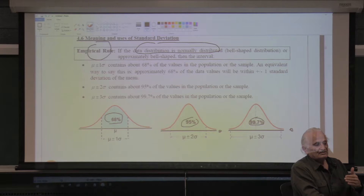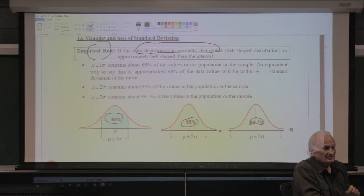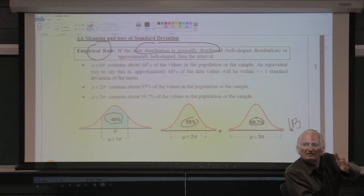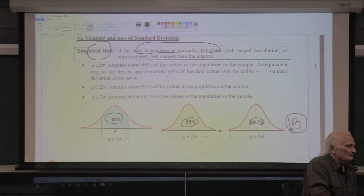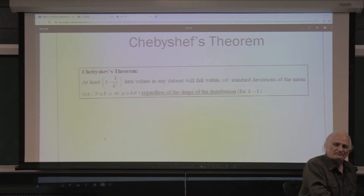Many times, the best way to approach outliers is to present results both with and without them — and sometimes the difference is huge. For example, if all salaries are between $10,000 and $100,000 and one value is one billion, including it will dramatically change the average. So do you want to include it? If the data is not normally distributed, then we use Chebyshev's theorem.